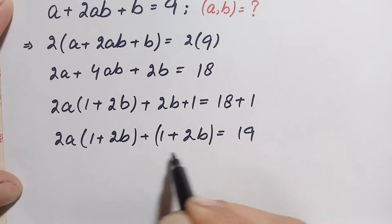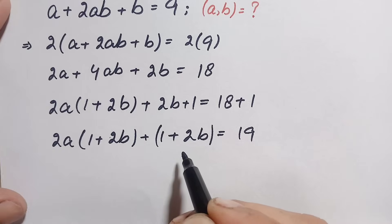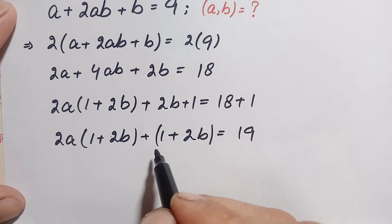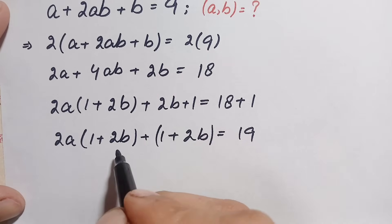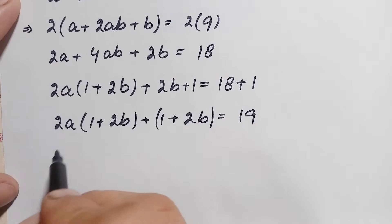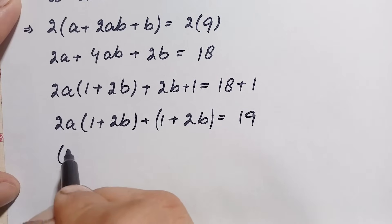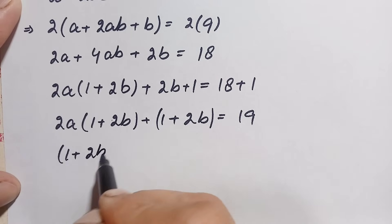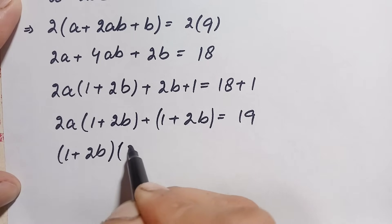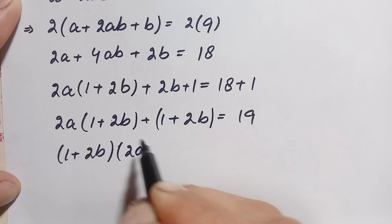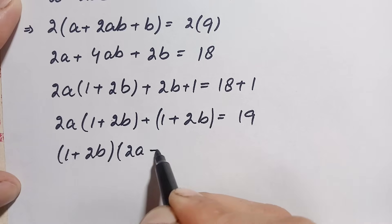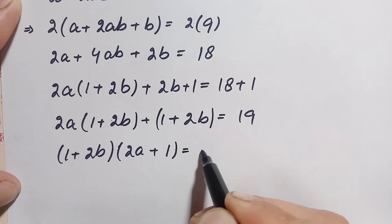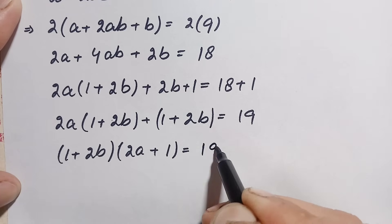Now look — (1 + 2b) is common in both terms on the left hand side. So we will factor out (1 + 2b) from the left hand side. This becomes (1 + 2b)(2a + 1) = 19.